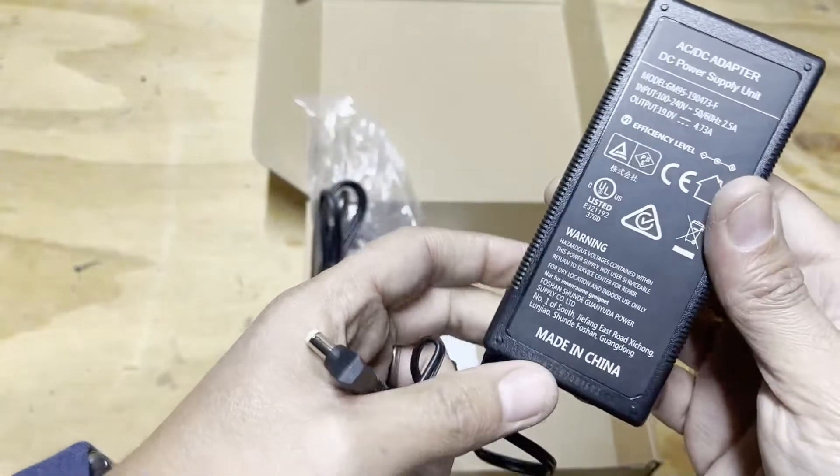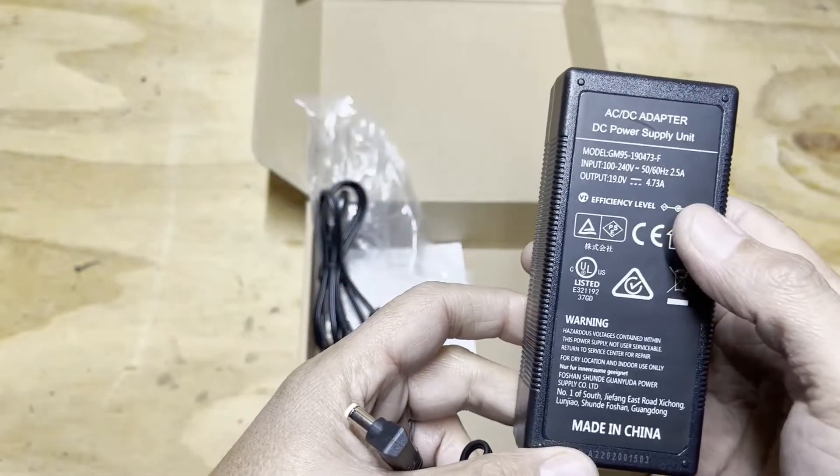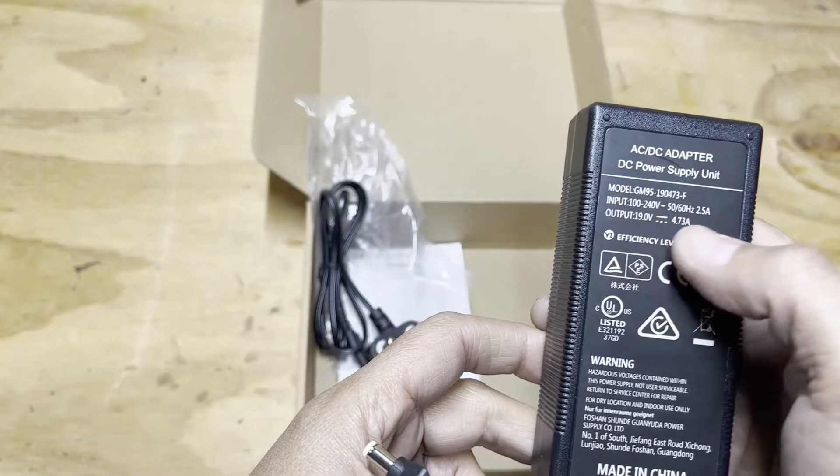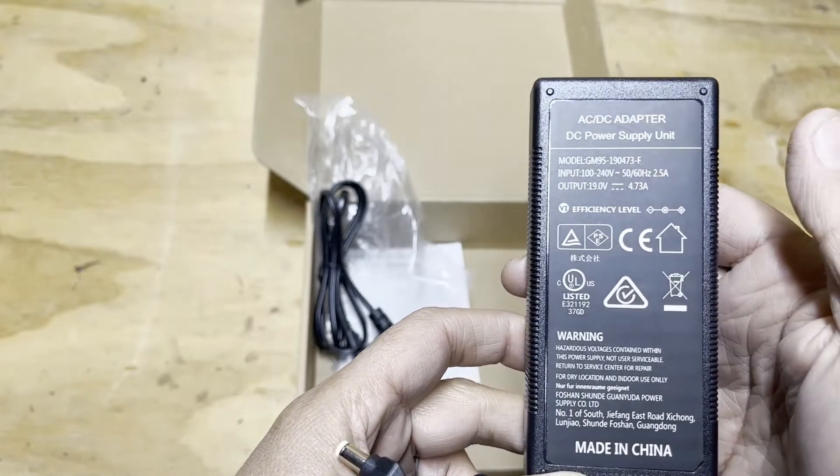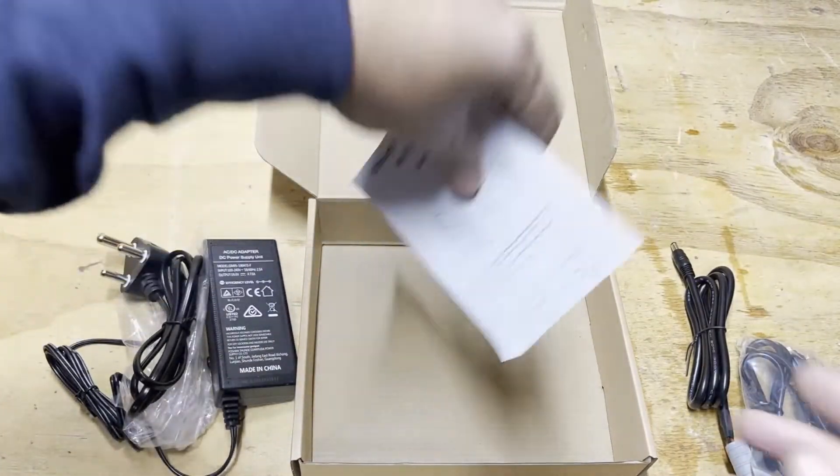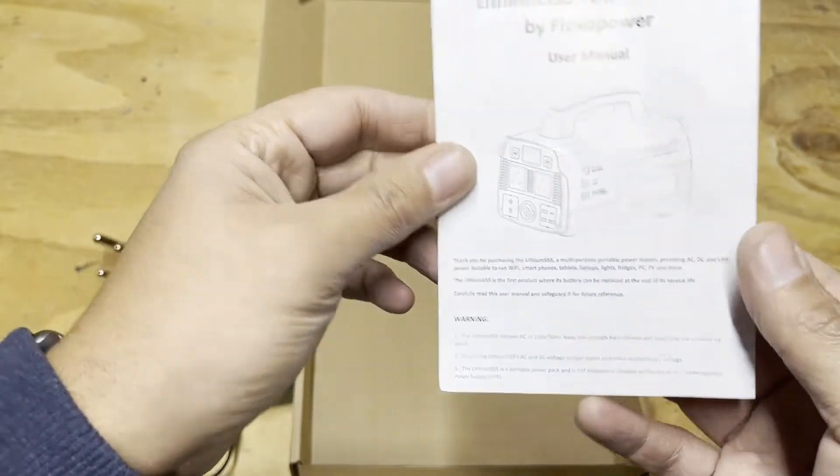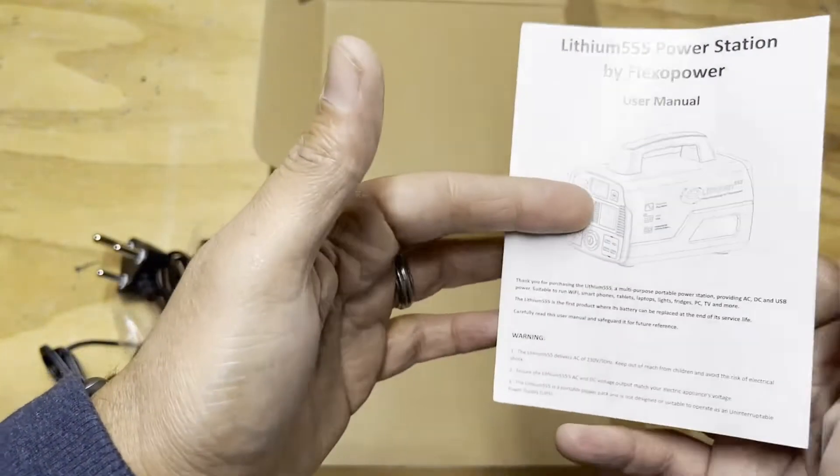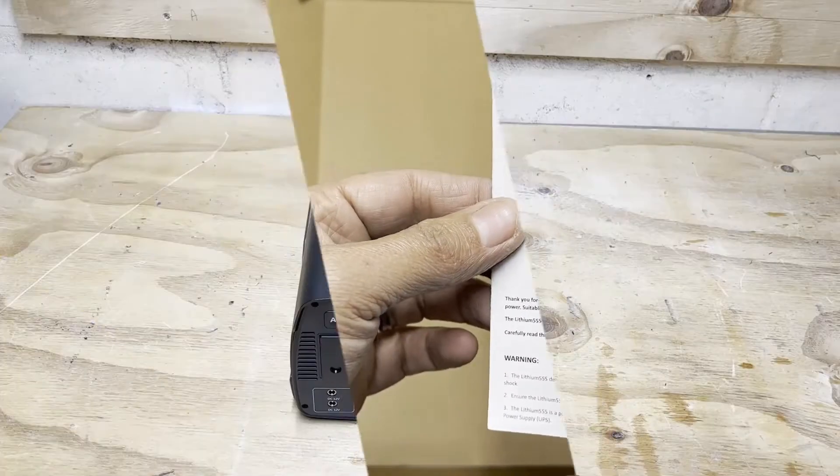Let's look at the specs of this. The output is 19 volts at 4.73 amps and then you've got the manual. So let me look at the manual, read about how to use this thing correctly, and then we'll be back.